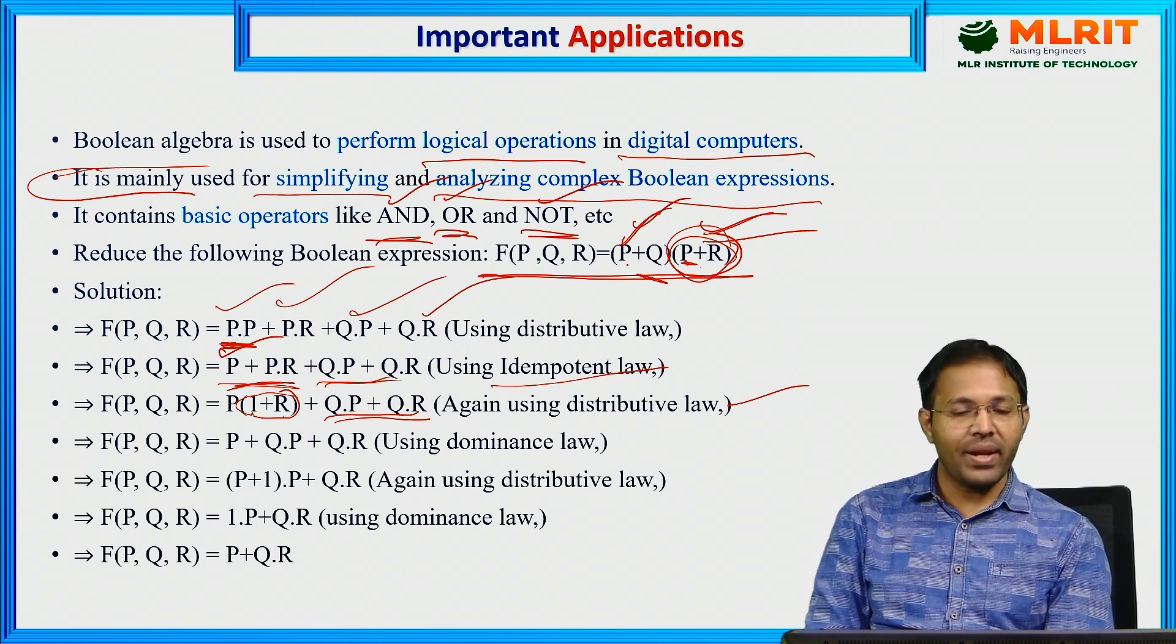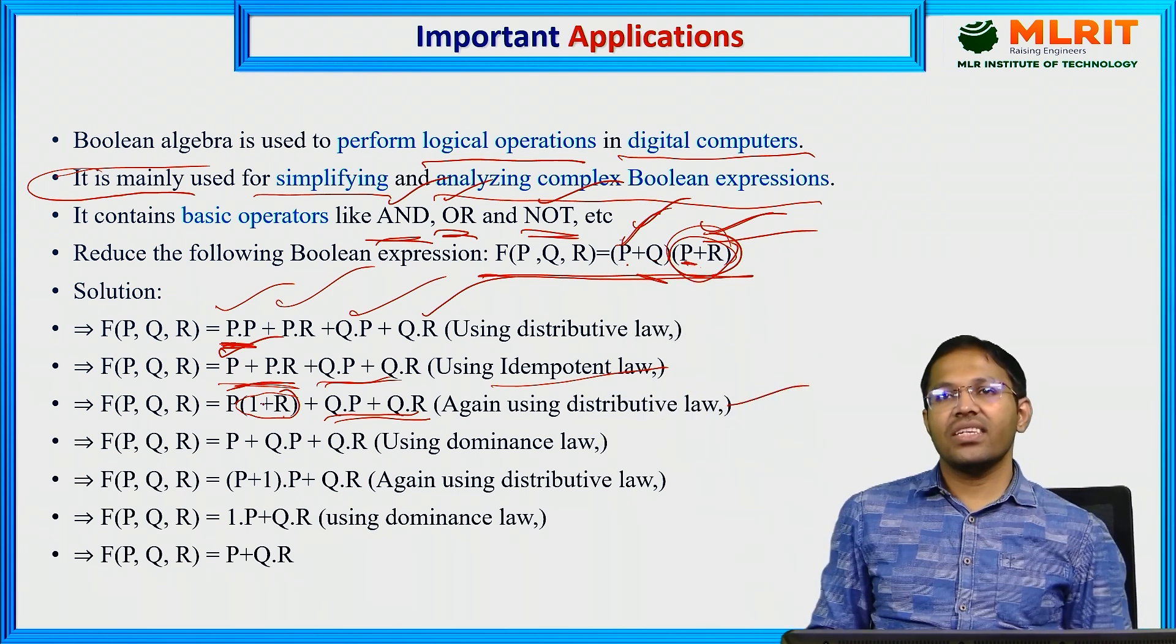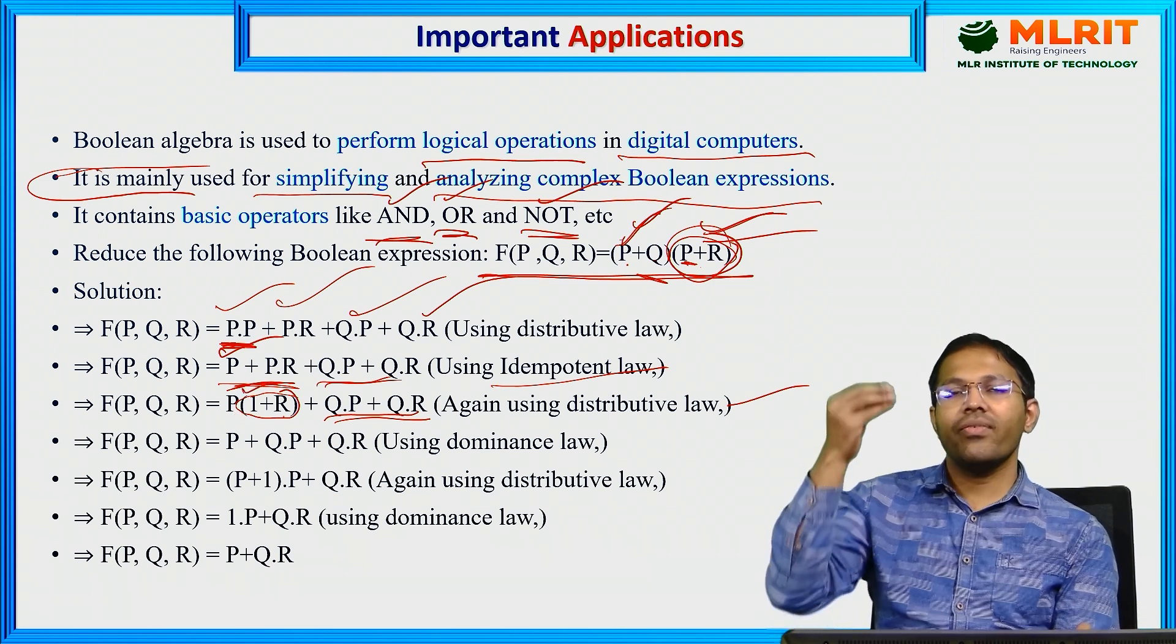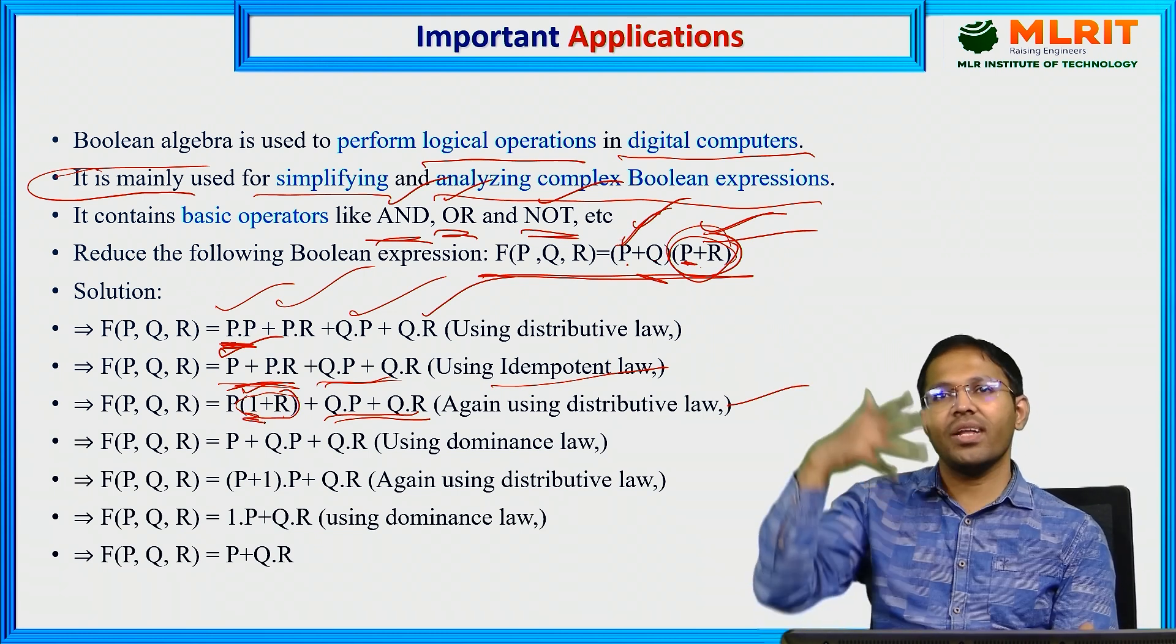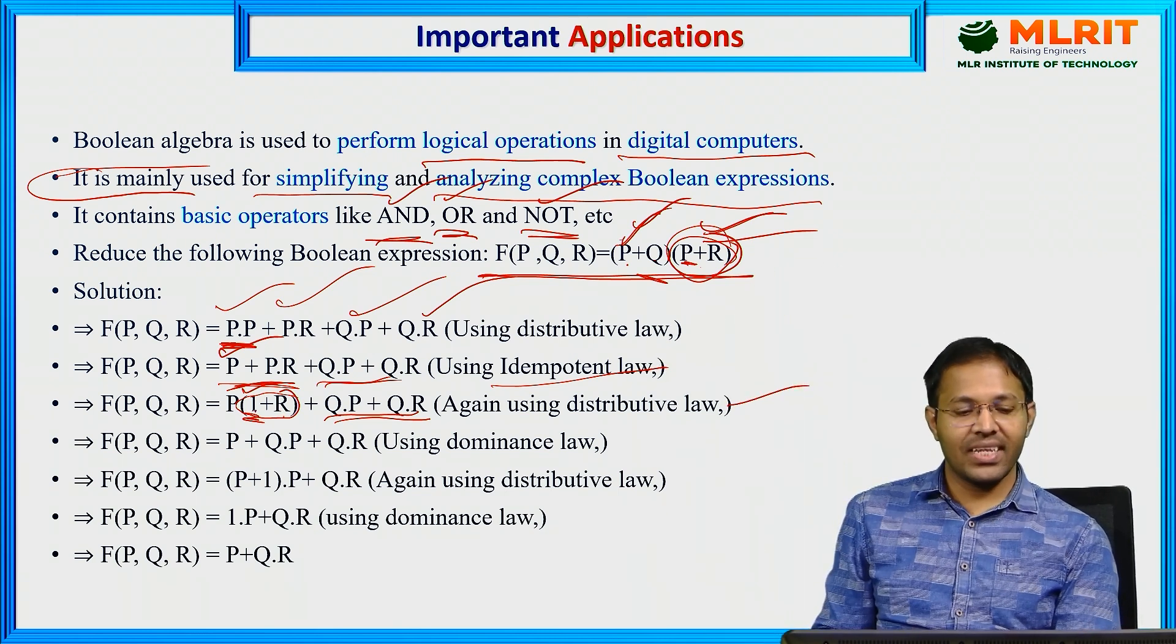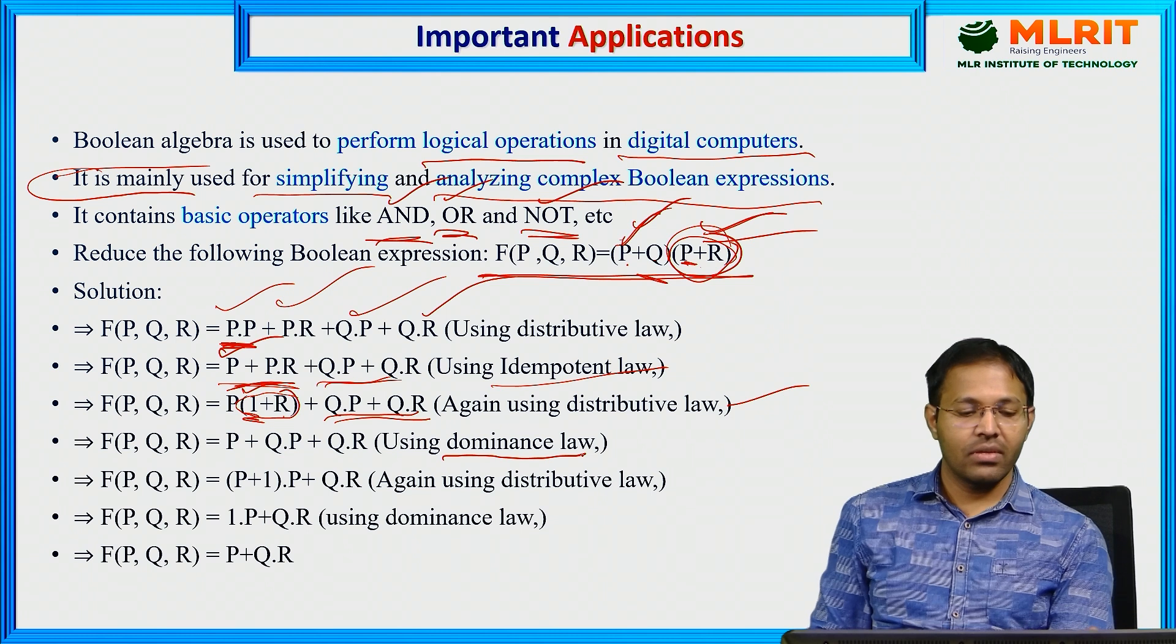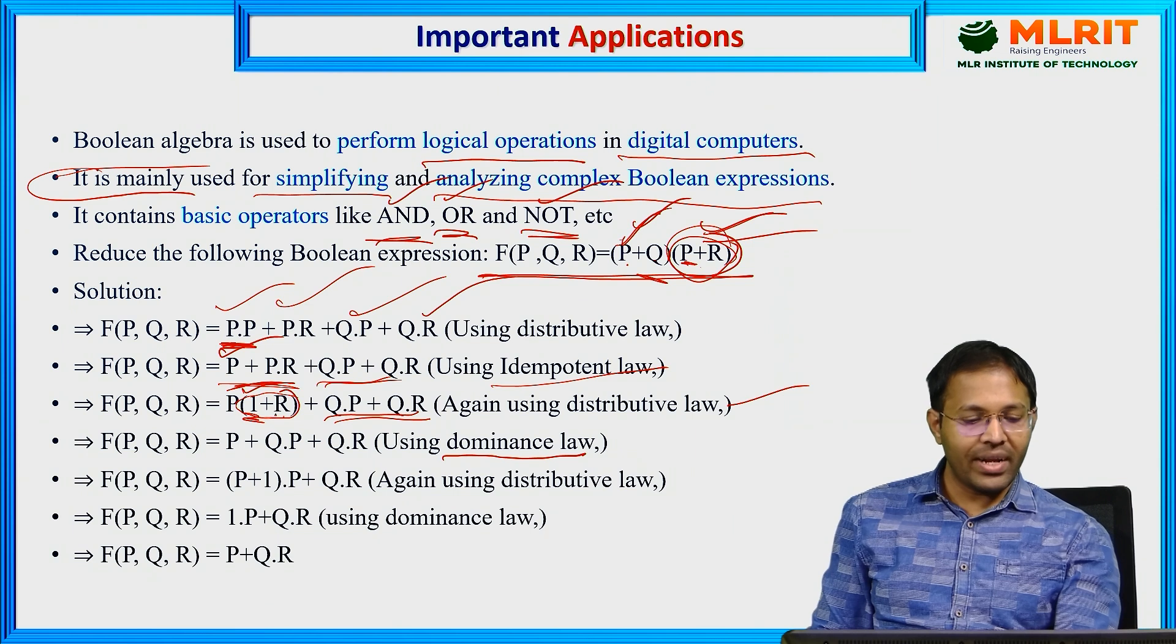Now again, R plus 1. 1 plus anything gives us always 1. It is like this: True, 1 stands for true. Now even if R is false, we have a true case here. We can proceed with the true case. Even if R is true, double okay. That is the reason 1 plus anything in Boolean algebra is always 1. That is known as dominance law. 1 is dominating. Hence we have the term dominance law. 1 into R gives us 1, 1 into P gives us P.